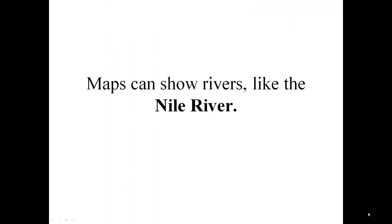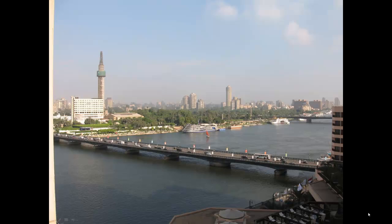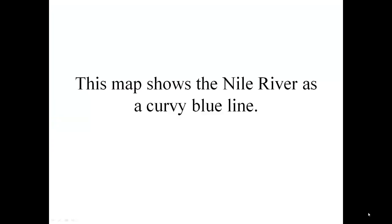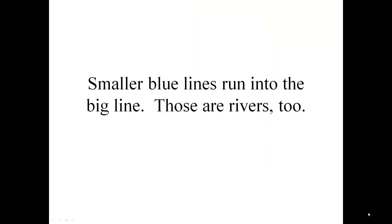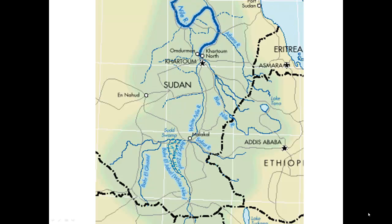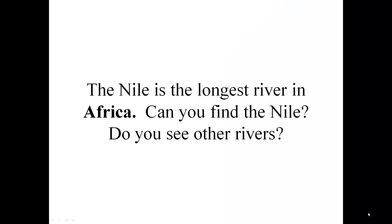Maps can also show rivers, like the Nile River. This map shows the Nile River as a curvy blue line. Smaller blue lines run into the big line — those are rivers too. The Nile is the longest river in Africa. Can you find the Nile? Do you see other rivers?